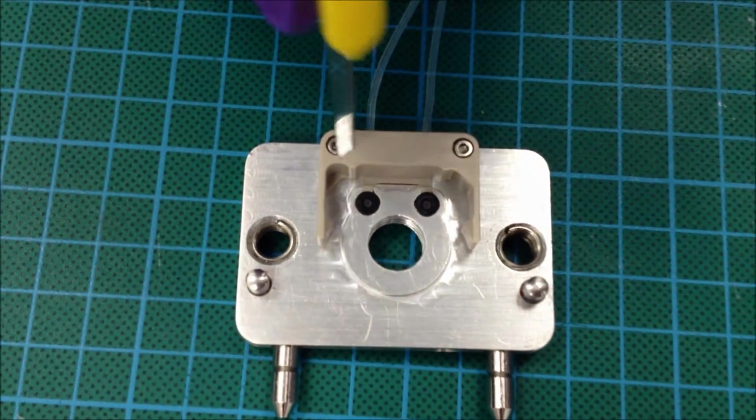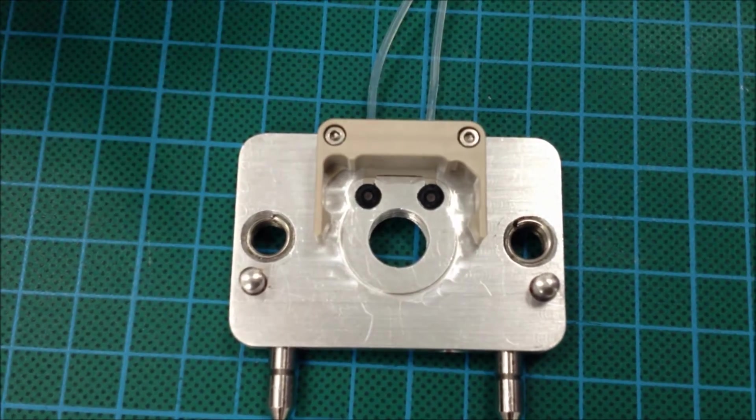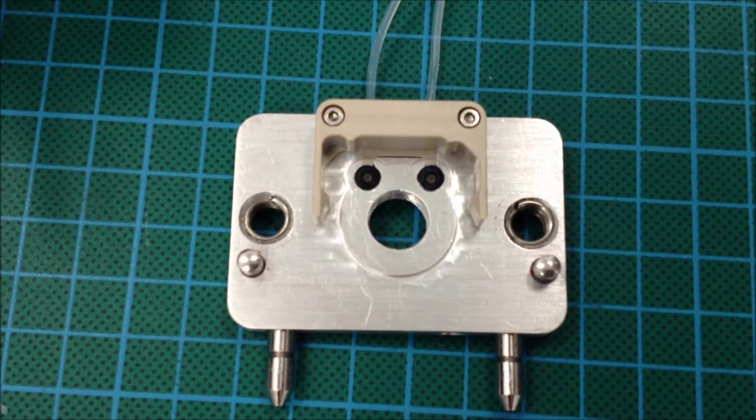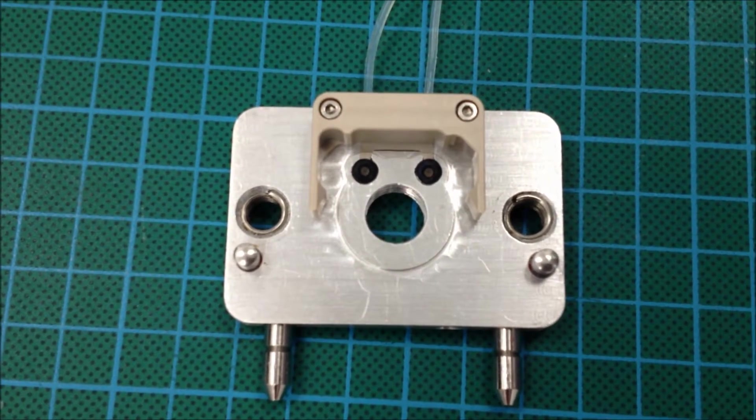On the bottom of the chip holder, you can see here that there's a chamfered edge there. That's to receive the equivalent on the chip itself.